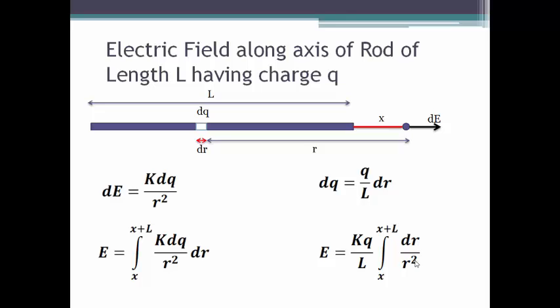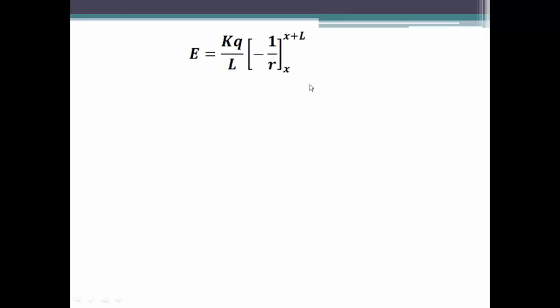So we are left with dr by r square. Now you know that integration of 1 upon r square dr is nothing but minus 1 upon r having limits from x to x plus L in this case.